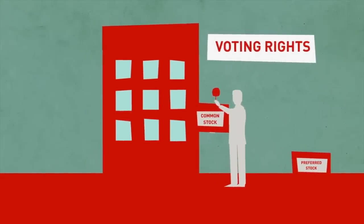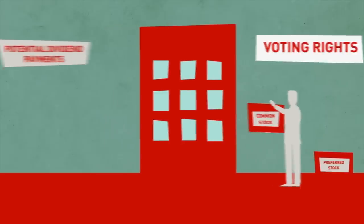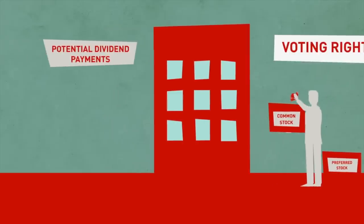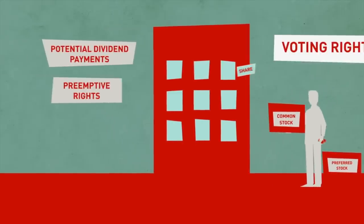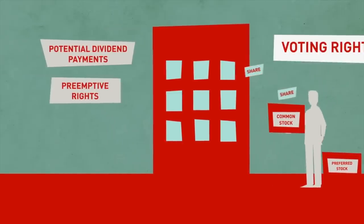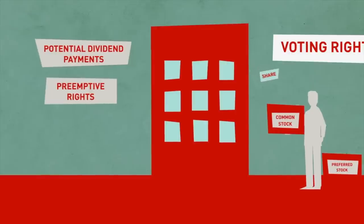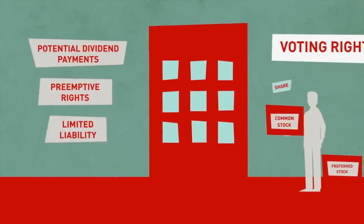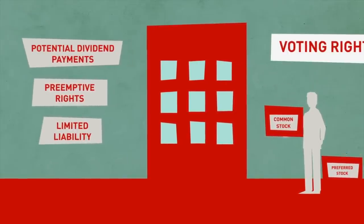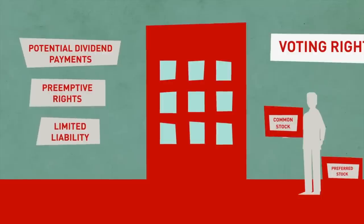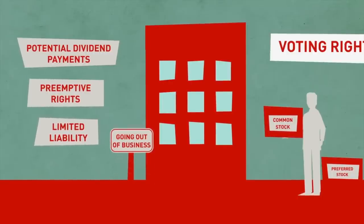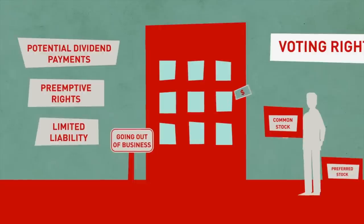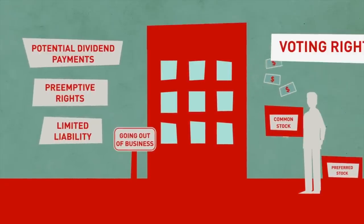Other privileges that you may be entitled to are potential dividend payments, preemptive rights — or the right to buy newly issued shares before they are made available to the general public — and limited liability in the event that the company goes bankrupt.